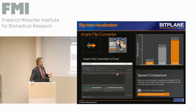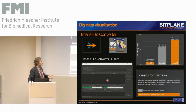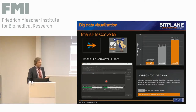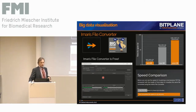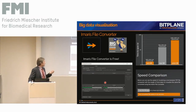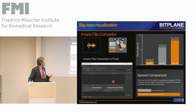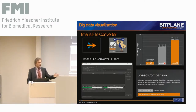The Imaris file converter is the first tool you get in touch with. Basically it's batchable, so you can throw in a lot of datasets and it will do the conversion. The nice thing is it doesn't need a license, so you can put it on multiple machines, maybe close to the acquisition already and run it from there. You can run it as well from the command line, which is useful when you want to automate things.